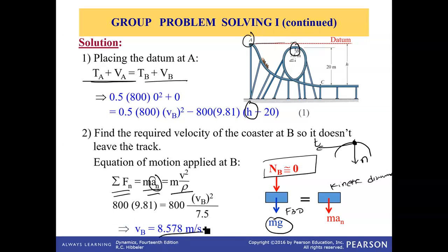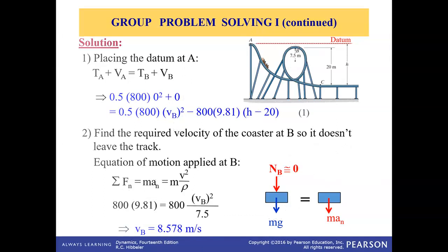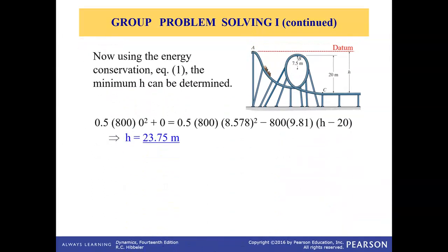And now we can go back and substitute that velocity here and we can solve for h. So when we do that, we get the value of h as 23.75 meters, this height.